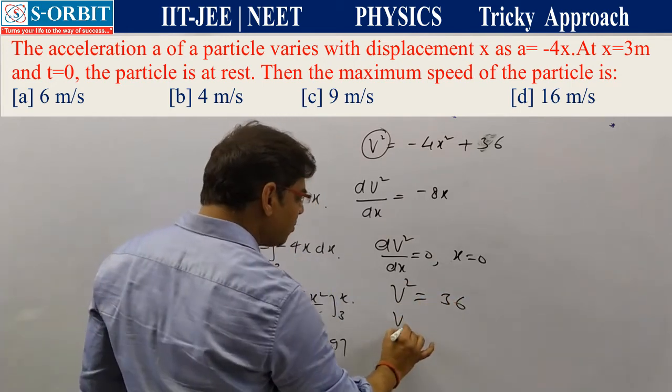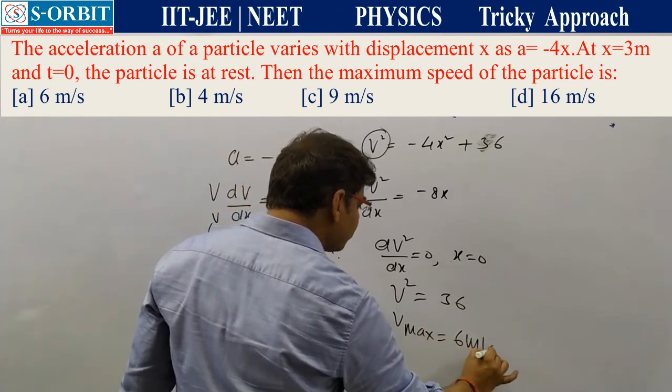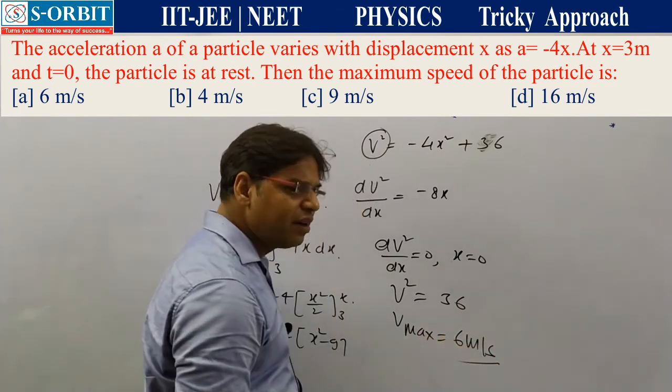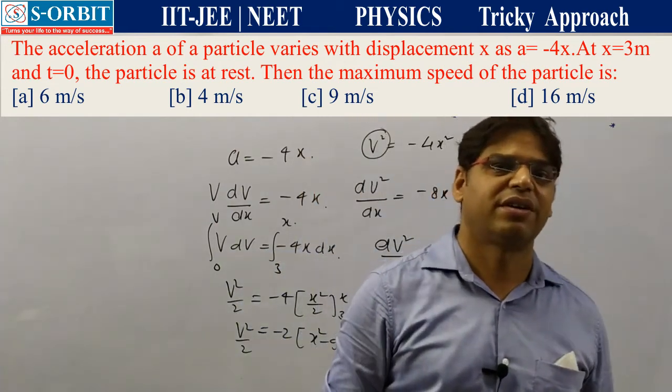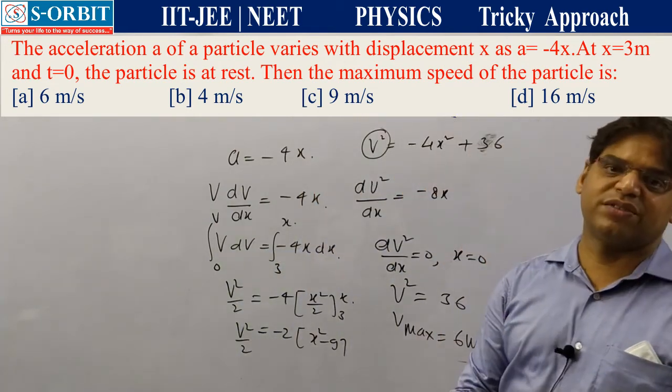So the maximum speed attained by the particle is 6 meters per second. The answer is option A. Thank you.